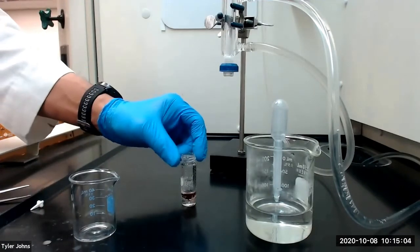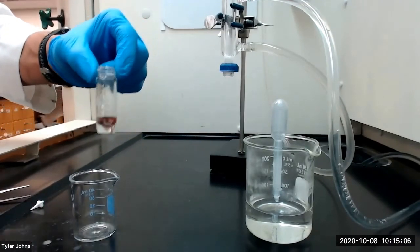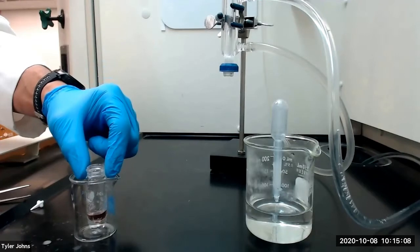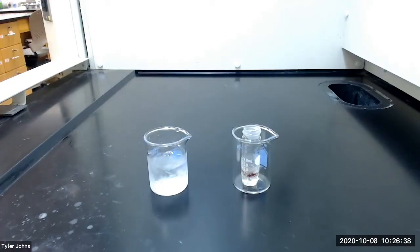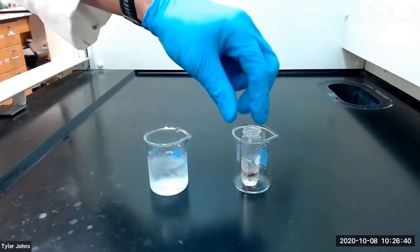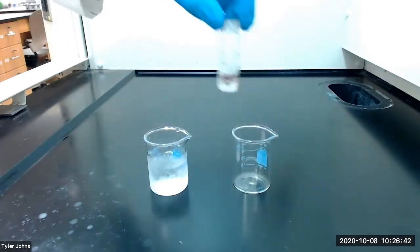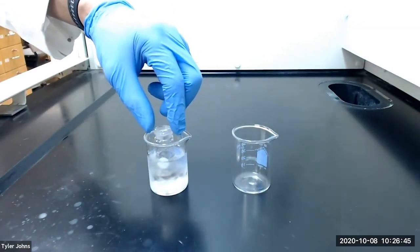We'll then place our conical vial in a 50-milliliter beaker and allow it to cool to room temperature. Once the vial has cooled to room temperature, we will place the vial for about 10 minutes in an ice water bath to complete crystallization.